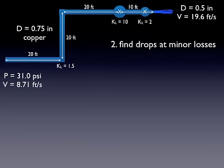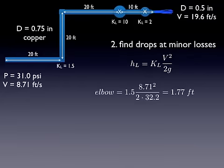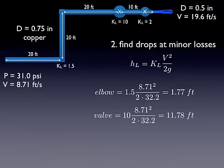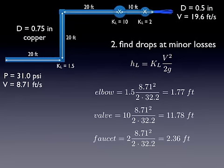Now let's find drops. The energy loss is at the minor losses. So the head loss is KL times V squared over 2G. We know the KL for the elbows. That gives us a loss of almost 2 feet. At the valve, it's more significant. It's almost 12 feet. And at the faucet, it's a little over 2 feet. So that gives us our vertical drops on our chart.